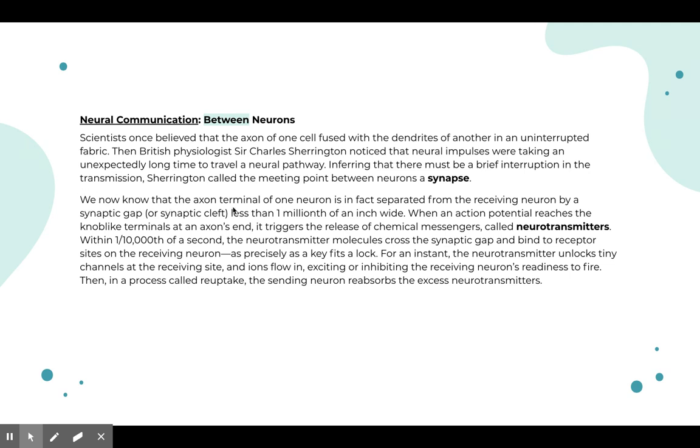We now know that the axon terminal of one neuron is in fact separated from the receiving neuron by a synaptic gap. Sometimes they call it synaptic cleft. And this thing is really, really, really small. It's less than one millionth of an inch wide, I can't even really picture how small that is, but it's extremely small. When an action potential reaches the knob-like terminals at the axon's end, so it reaches those end ones, it triggers the release of chemical messengers. These chemical messengers, we're going to talk more about next week because they're really important. These are called neurotransmitters. And we have tons of different kinds of neurotransmitters inside of us, and they impact things like our memory, and our emotions, and all that kind of stuff.